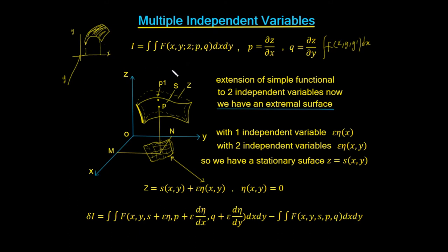This is our extension to our simple functional. We're changing the functional from a function of one variable x to two variables, x and y. That means we're going to have a double integral, integrating with respect to both x and y. We have our function of x and y, and up the z-axis we have z as a function of x and y. We also have the values p and q: p is the rate of change of z with respect to x, and q is the rate of change of z with respect to y.